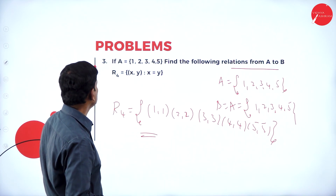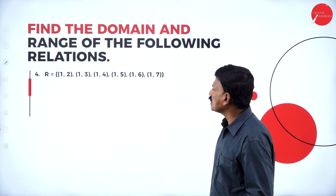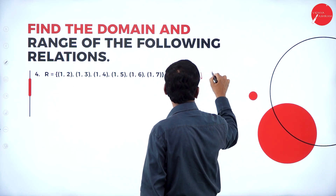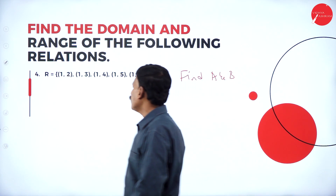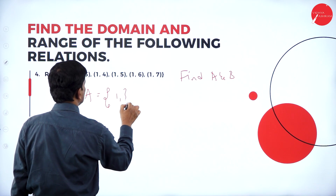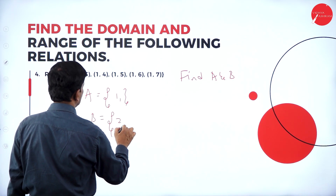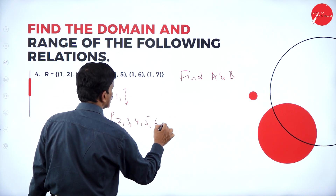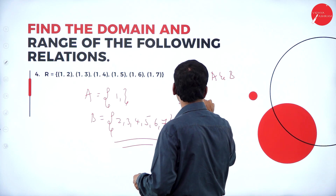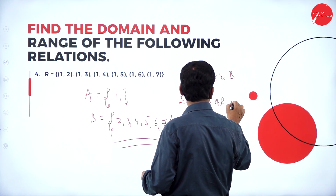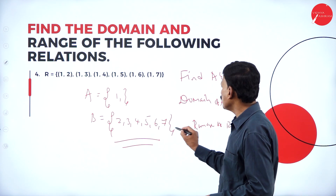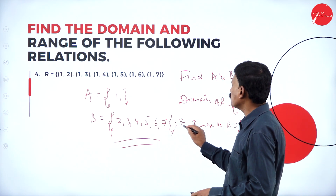Now let us take another example. The relation R is given as {(1,2), (1,3), (1,4), (1,5), (1,6), (1,7)}. Find the elements of sets A and B. A is the set of all first members, so A = {1}. B is the set of all second members, so B = {2, 3, 4, 5, 6, 7}. The domain of R is {1} and the range of R is {2, 3, 4, 5, 6, 7}.